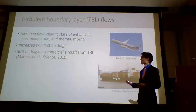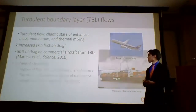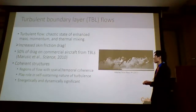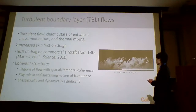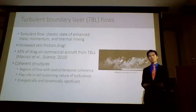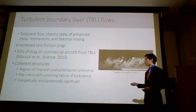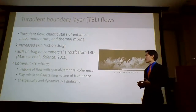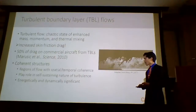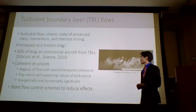We clearly want to understand this phenomenon, but it's made complex by its chaotic and almost random nature. One foothold that a great deal of research has taken is the idea of coherent structures — regions of spatially and temporally coherent flow within this chaotic flow. Some coherent structures have been found to play a role in the self-sustaining nature of turbulence, while others are energetically and dynamically significant. If we can understand the mechanisms behind these coherent structures, perhaps we can develop a backbone understanding of this complex turbulent problem and ultimately develop flow control mechanisms to modify and mitigate some of these effects.